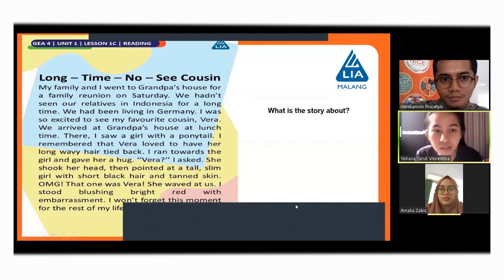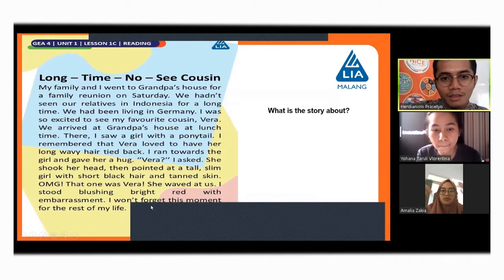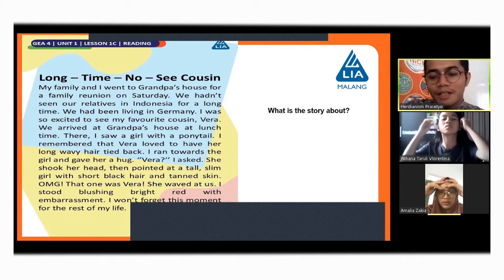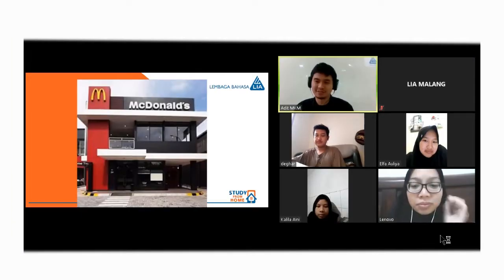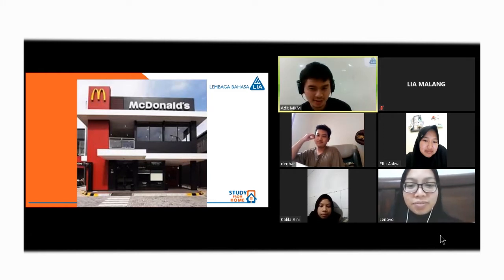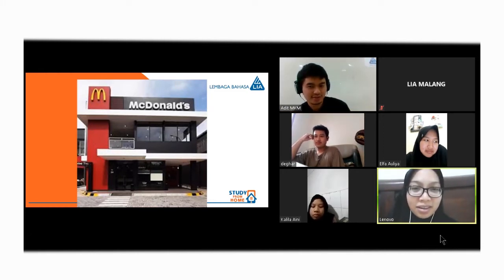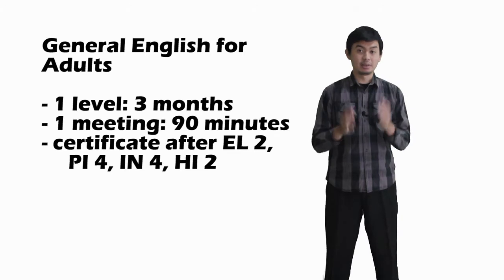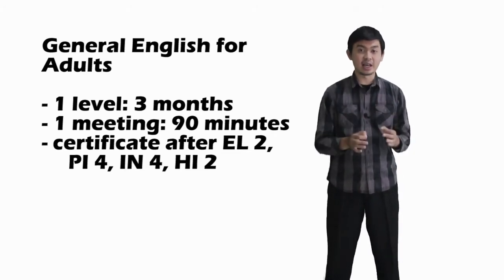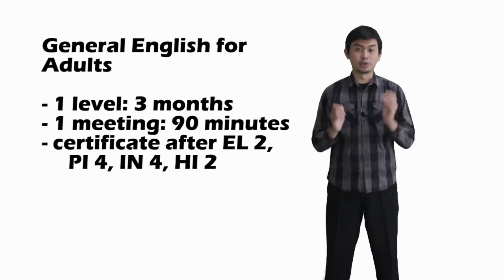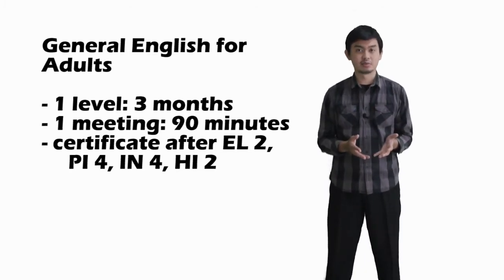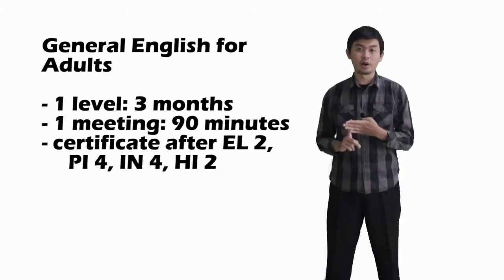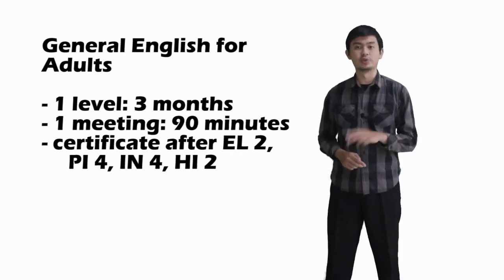The next program is GEA, General English for adults. This program is for adult students like senior high school students, college students, employees, and others. We have from elementary 1 and 2, pre-intermediate 1 until 4, intermediate 1 until 4, and then high intermediate 1 and 2. Similar with ET, one level is done within 3 months period. The duration of each meeting is 90 minutes. And you can have your certificate after completing level elementary 2, pre-intermediate 4, intermediate 4, and high intermediate 2.